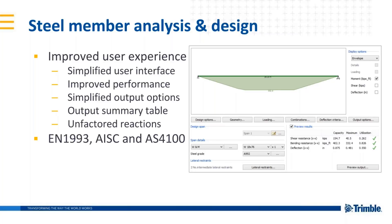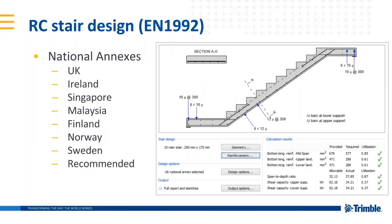In September we also included an improved version of our steel member analysis and design calculations for all three codes: Eurocodes, USA, and Australian. The user interface has been significantly improved to allow members to be designed more quickly and more efficiently. The overall user experience has been improved, the output options have been simplified, and a summary table can also now be included in this calculation.